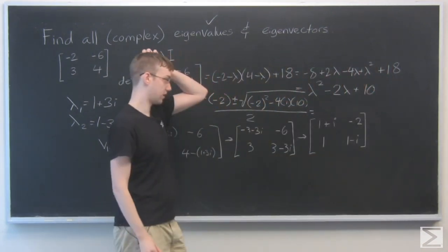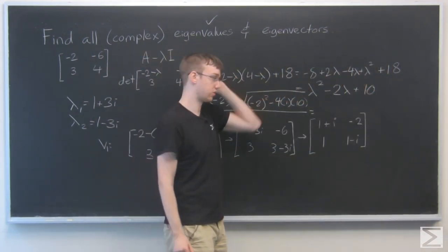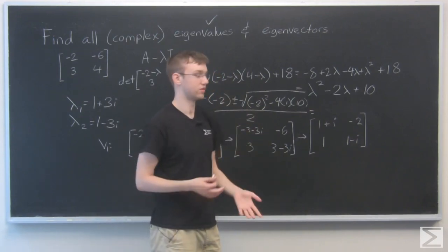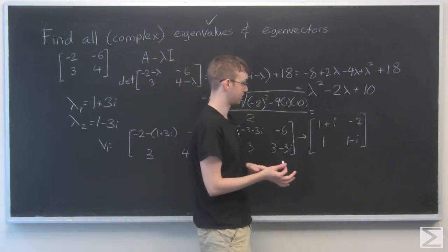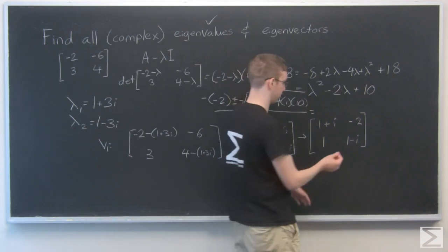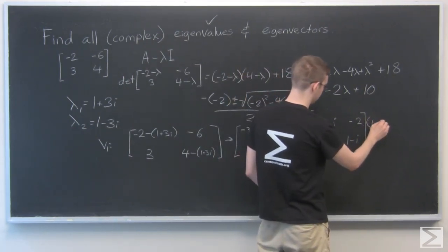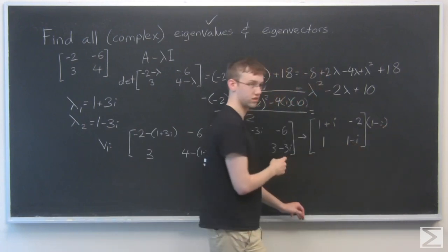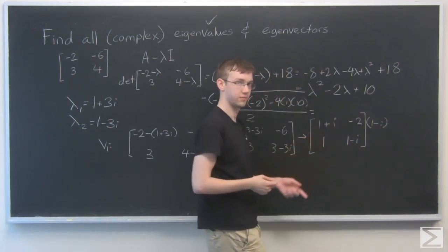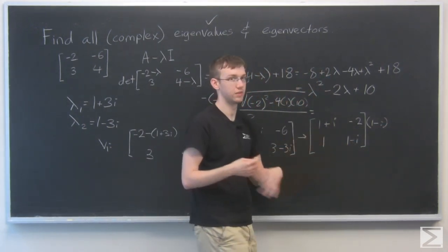OK. I want to get this into reduced row echelon form, and that'll give me... It'll be really easy to tell from that what the eigenvectors are. So I'm going to go ahead and multiply this top row by 1 minus i, which is the complex conjugate of 1 plus i. And so that'll make that into a real number.